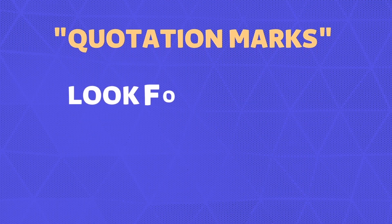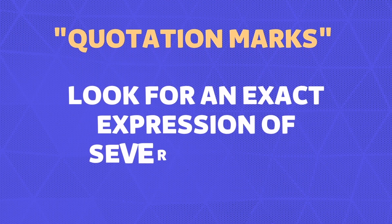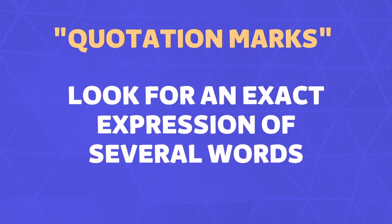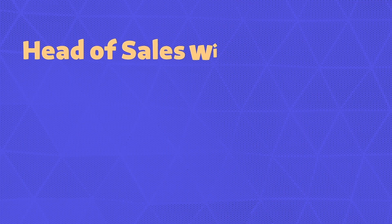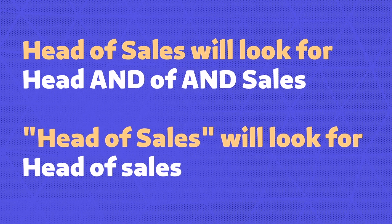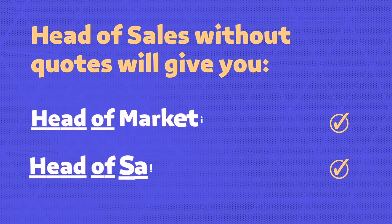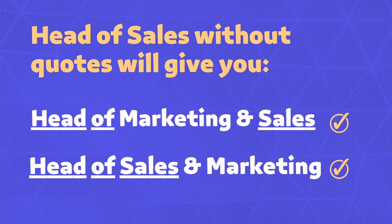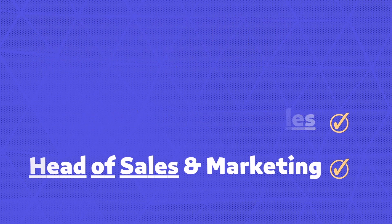Quotation marks allow you to search for an exact expression — more than one word. If you write several words in the LinkedIn search engine without quotation marks, LinkedIn will by default add AND between them. So if you write 'head of sales', LinkedIn reads it as 'head AND of AND sales', and job titles like 'head of marketing and sales' will come up. But if you add quotation marks around the expression, LinkedIn will only look for those words in that exact order.